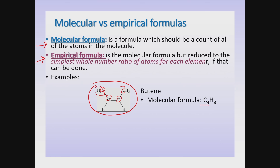If you look carefully there are three hydrogens here, another three here, one down here, one down here — so there are eight hydrogen atoms. That gives the molecular formula C4H8. The empirical formula is the molecular formula reduced to the simplest whole number ratio. Dividing each number by four gives C1H2, and since we never write a subscript of one, the empirical formula is CH2.